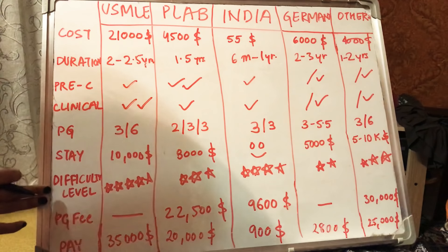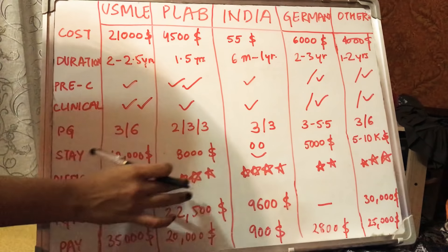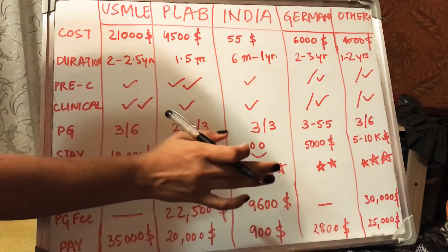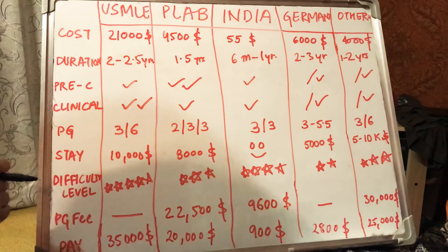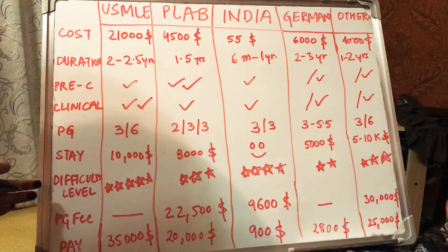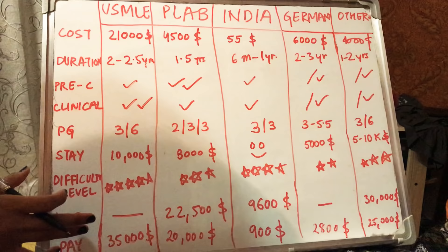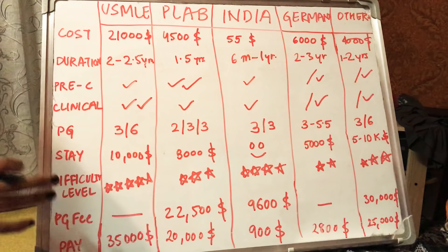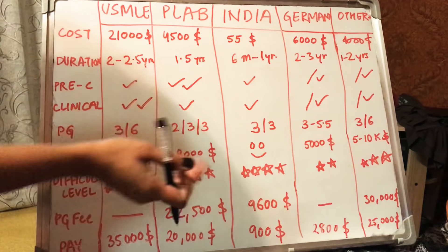For difficulty level, rated out of five stars: USMLE is 4.5, PLAB is 3, Indian PG is 4 or 3.5, Germany is 2, and others is 3. The criteria behind this is that USMLE deals with more clinical questions, whereas Indian PG and PLAB focus more on preclinical and less on clinical aspects — that's why I've given lower ratings to PLAB and Indian PG on this scale.